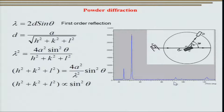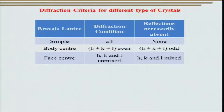The diffractogram is characterized by a couple of things: variation in intensity of the peaks as well as peak broadening. Both of these give us a lot of information about the structure of the material.